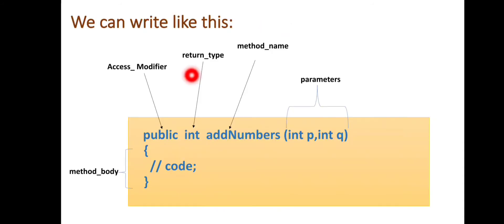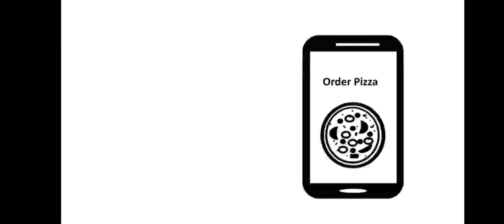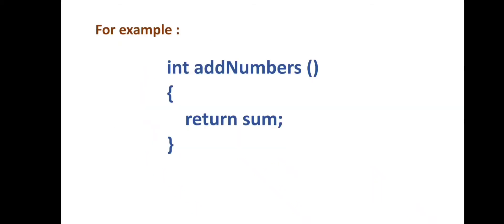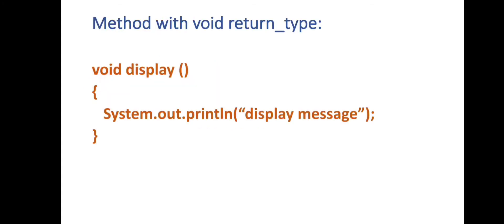Now we are going to discuss about return type. Return type specifies what type of value a method will return. From a real life point of view, if we order a pizza, we know we will get pizza as a return. So this method has a food return type because it is returning a pizza. Similarly, if a method has an integer return type, it returns an integer value — for example a sum. If a method has a float return type, it returns a float value. And if a method has a void return type, the method won't return any value. Void means nothing.